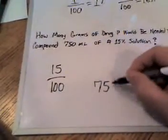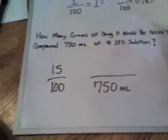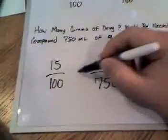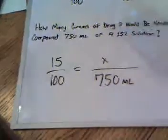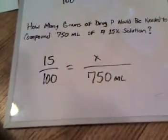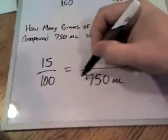So we have three factors, and if we can find out the unknown right here, we'll know how many grams of drug P to use in the 750 milliliters.